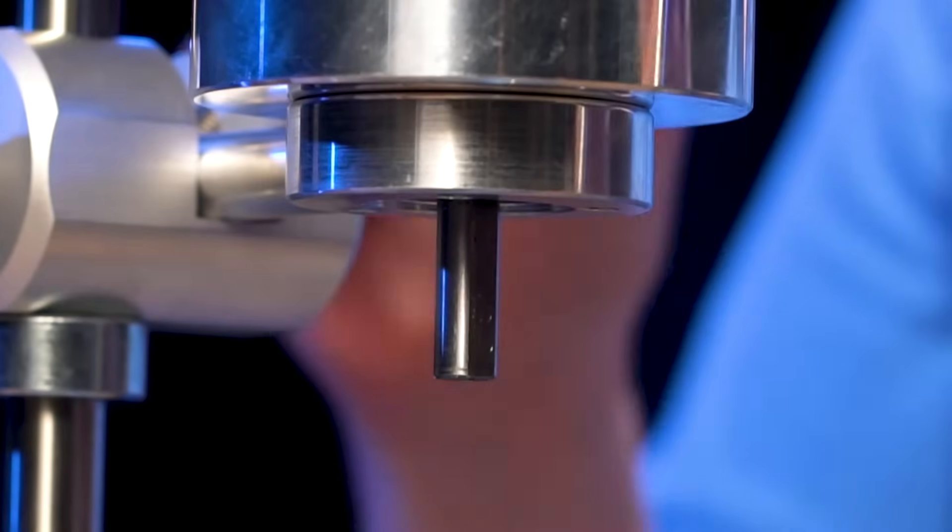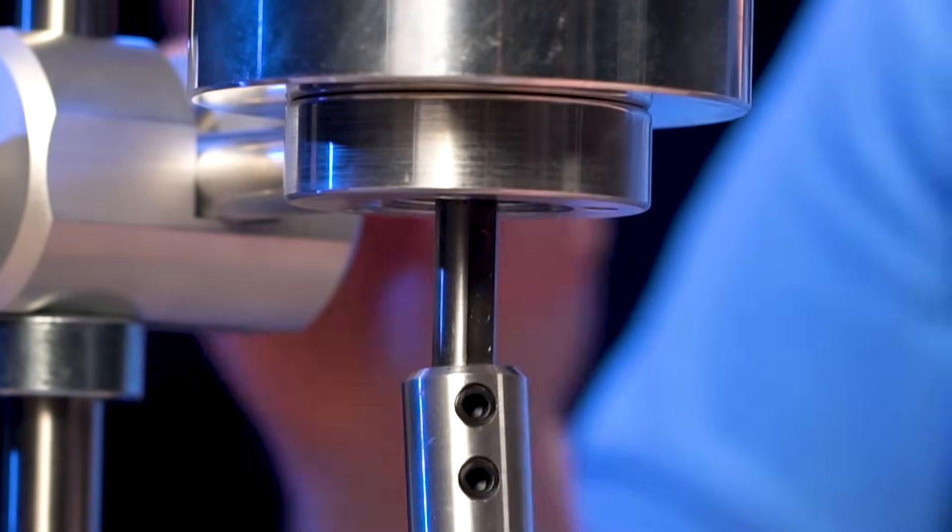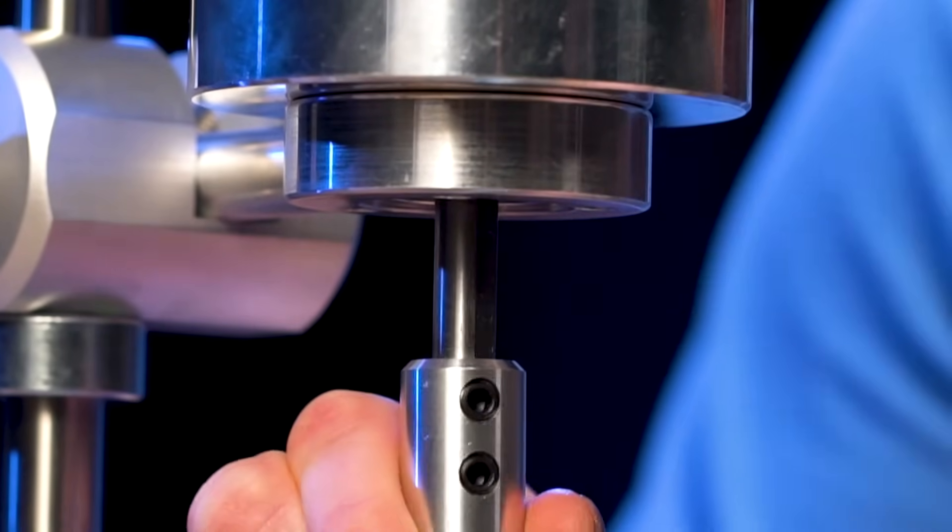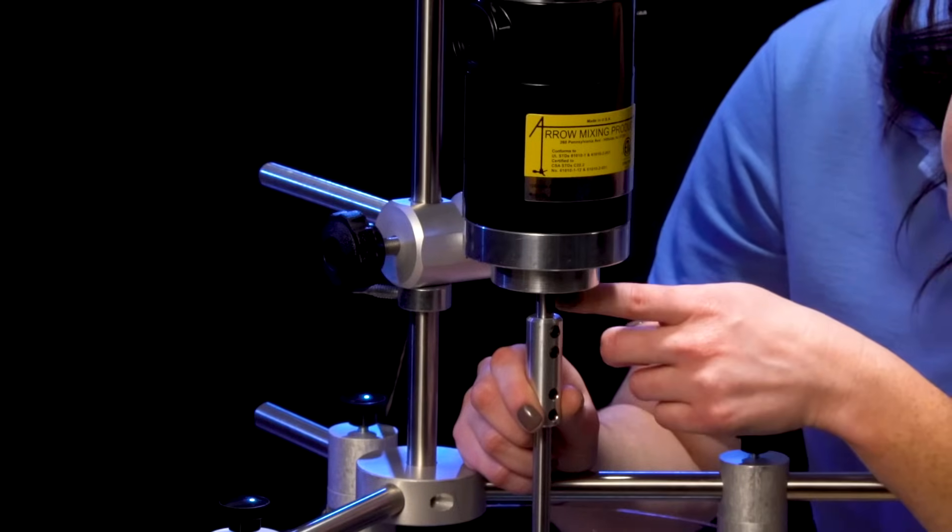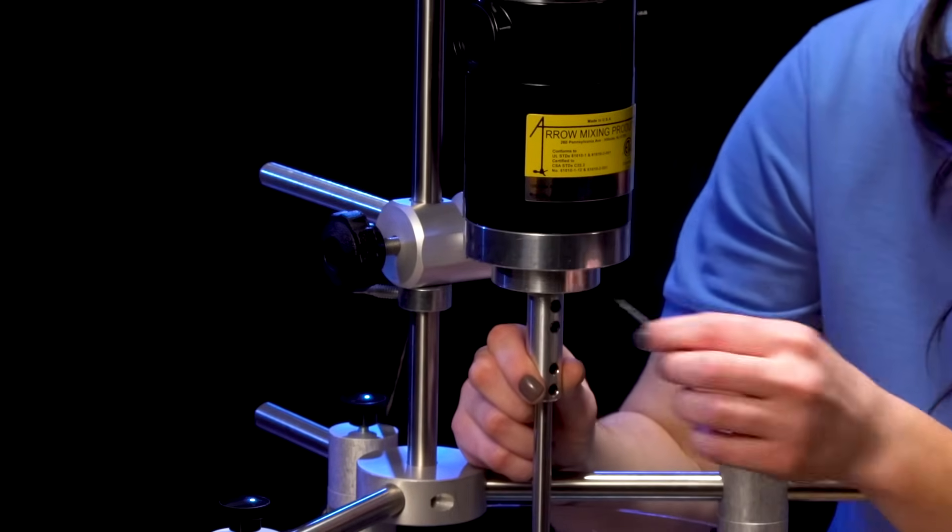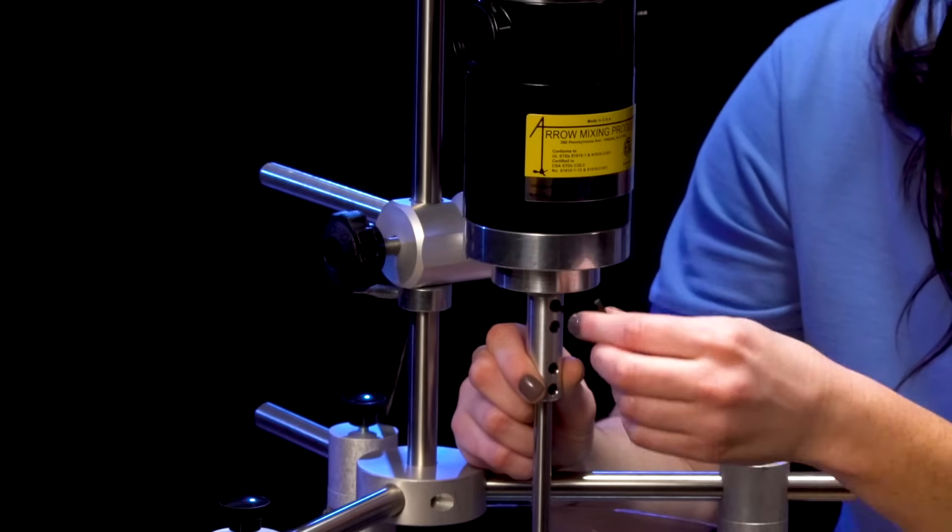Now, attach the propeller shaft to the stirrer. Tighten the top two set screws in the coupling to the flat side of the motor shaft with provided Allen wrench.